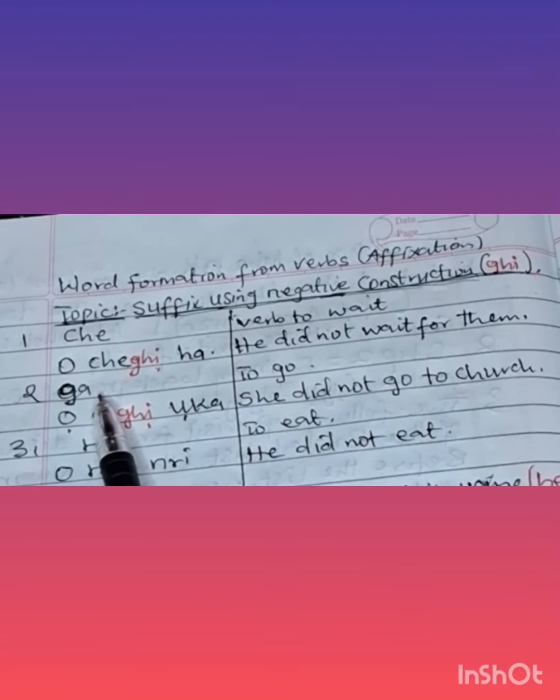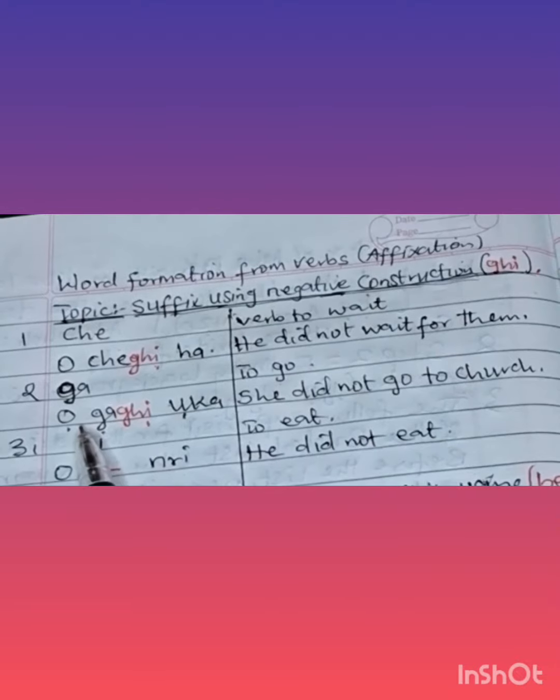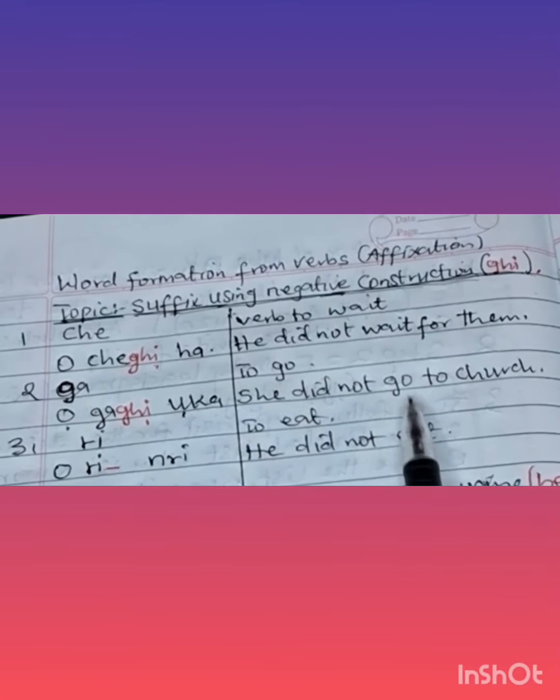Number two, ga. Verb to go. Oga inoka, she did not go to church.